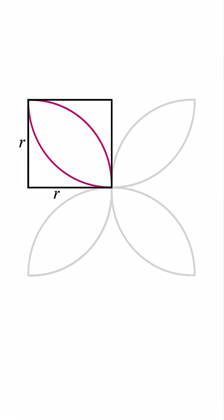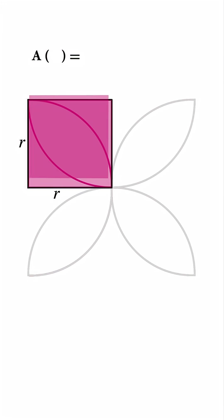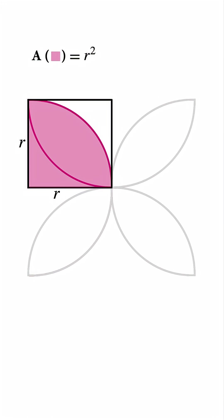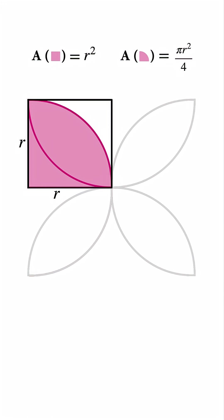Let's look at just one petal. Draw a square of side r around that petal. The area of this square is r squared. Inside the square, we have a quarter circle. Its area is pi times r squared, divided by four.